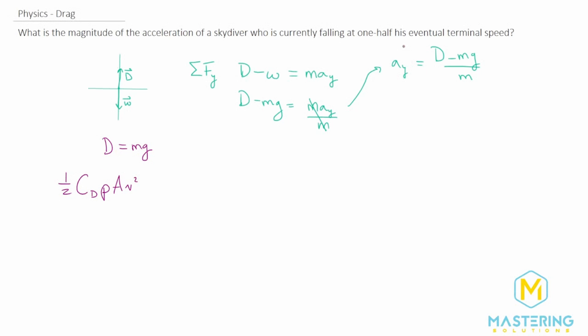But for the situation, we want one-half of the eventual terminal speed. So right here, let's just say that is v_term, but we want to divide it in half. So if you divide something in half, it's divided by 2. Or you could say we multiply it by one-half. So we have one-half c_d rho A, and then we have v_term divided by 2 squared.